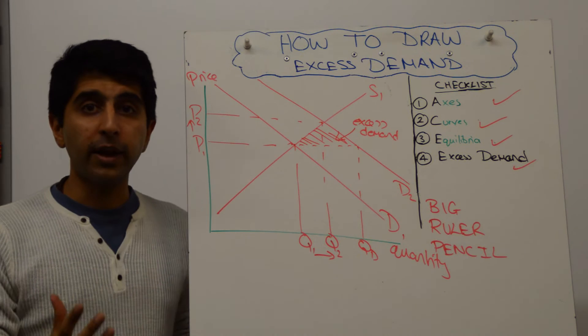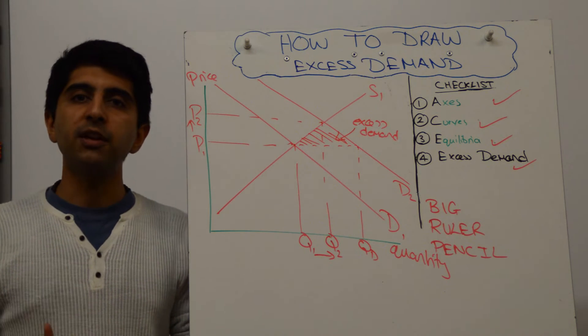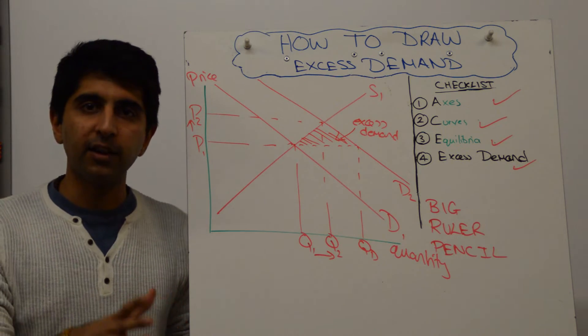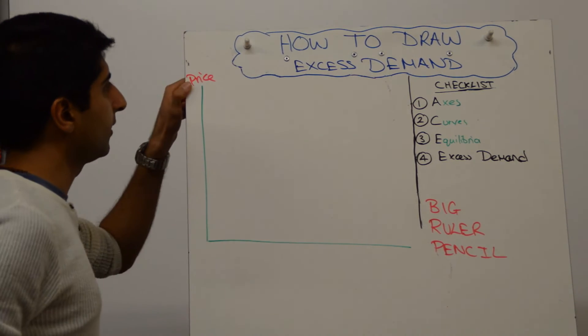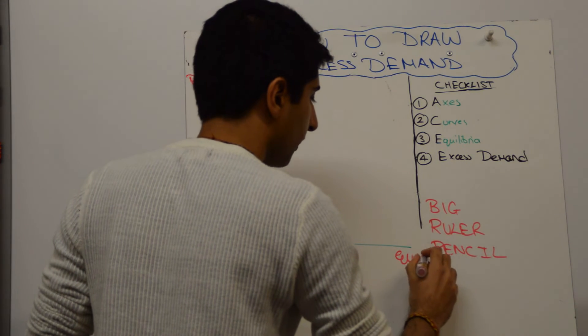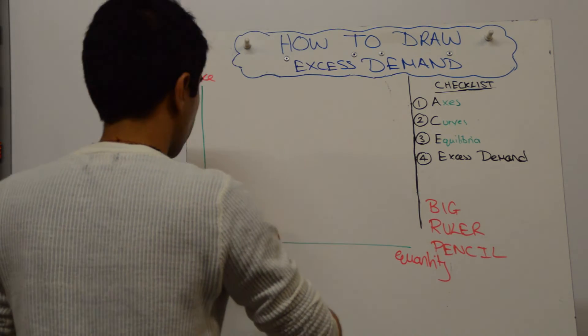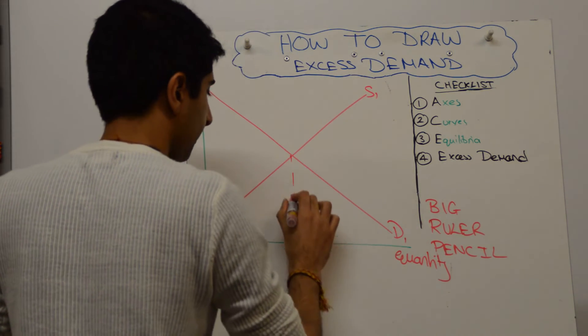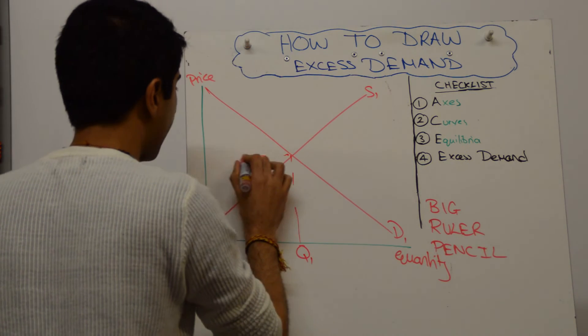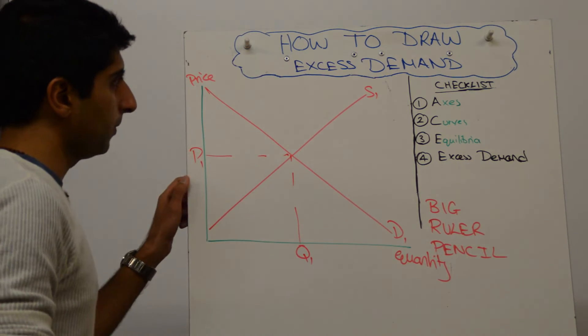That's one way to do it. Another way to do this is by shifting the supply curve to the left. Let's look at shifting supply to the left and also showing an excess demand. Start the same way, labeling the axis price and quantity, draw the initial equilibrium with supply and demand. You can see my technique, labeling always as we go along. Simple stuff.